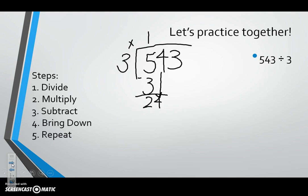We then ask ourselves how many times can three go into 24. Three can go into 24 eight times. We're going to again multiply those two numbers that we just got, leaving us with 24. We subtract, we get zero.